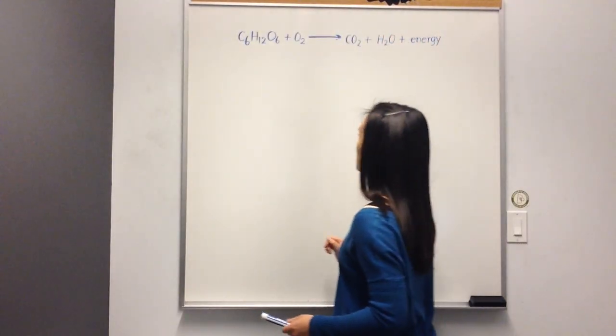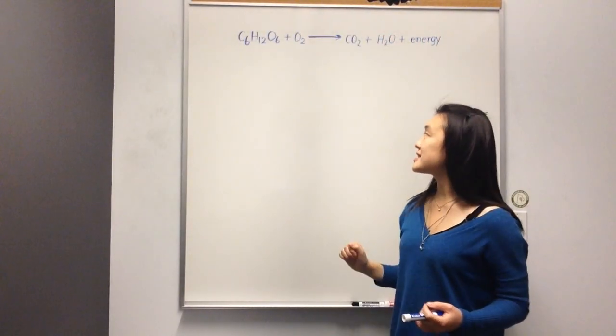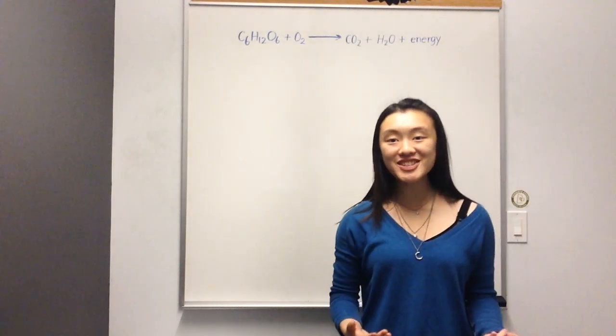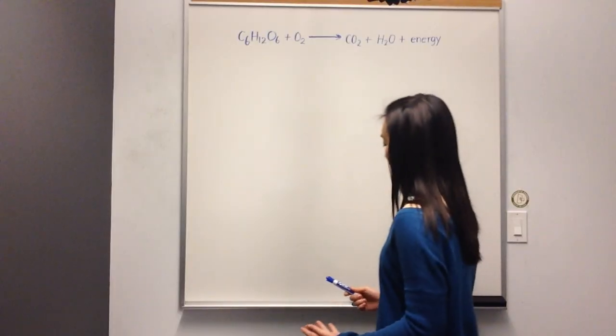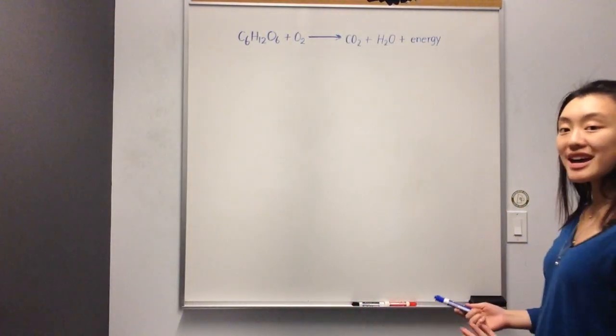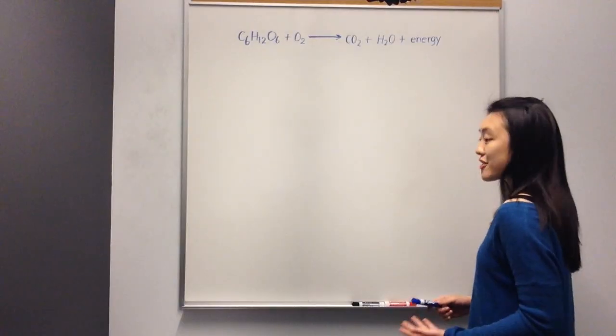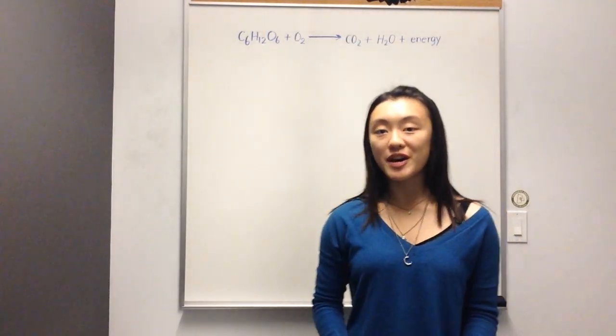We start with C6H12O6. It looks like a super long name, but essentially all that is is glucose. Glucose plus oxygen will result in the production of carbon dioxide, water, and energy in the form of ATP.